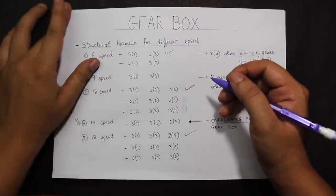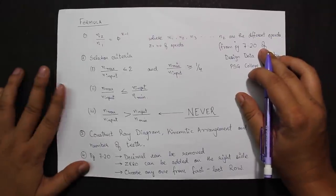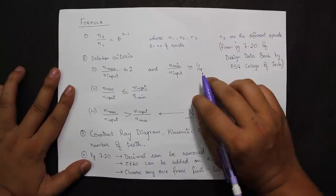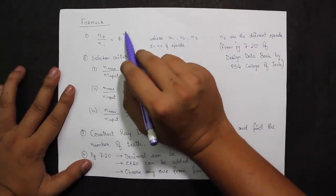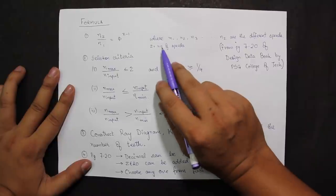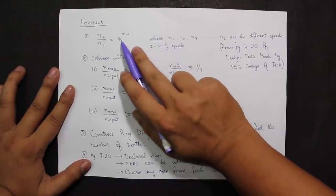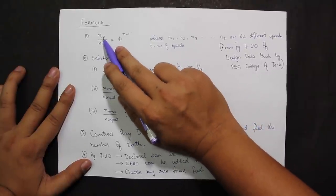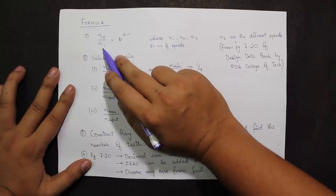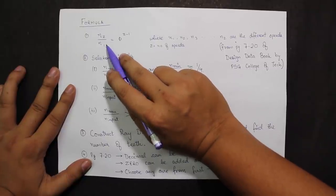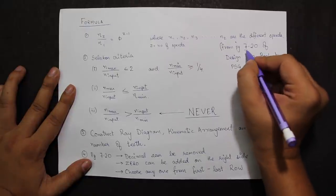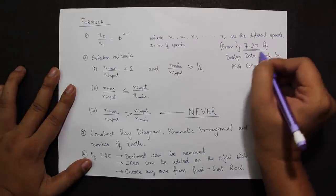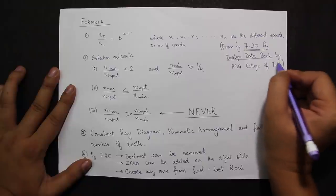Next we have the key formula: n_z / n_i = φ^(z−1), where n_z is the final speed given in the question and n_i is the initial or minimum speed. The available speeds are on page 7.20 in the Design Data Book compiled by PSG College of Technology.